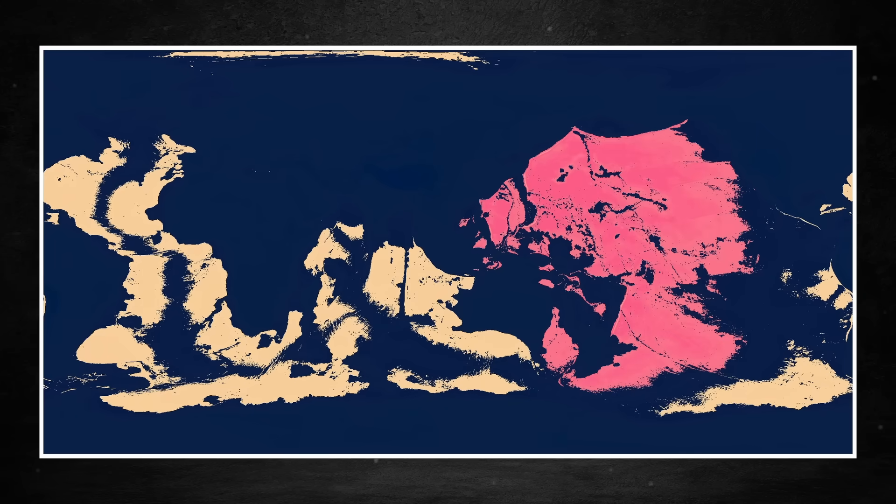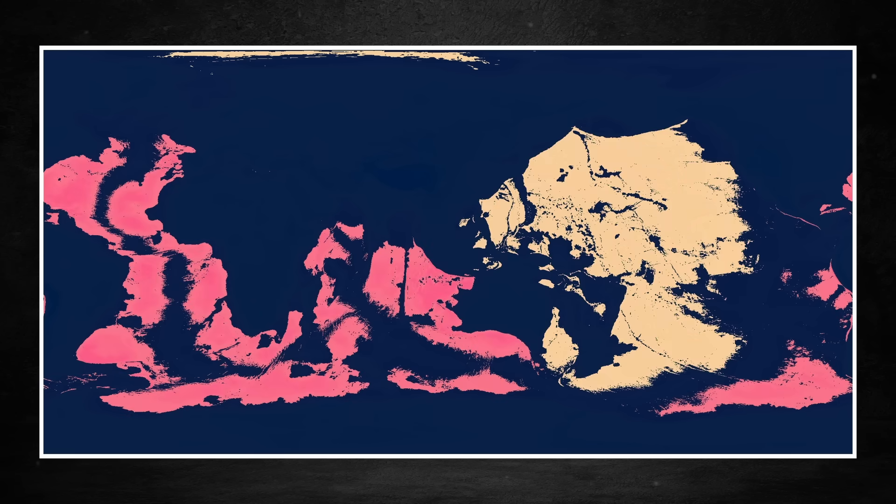Apart from this large continent, the rest of the landmasses would be like Australia, a mix of continents and large islands.